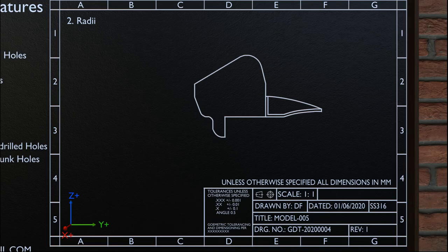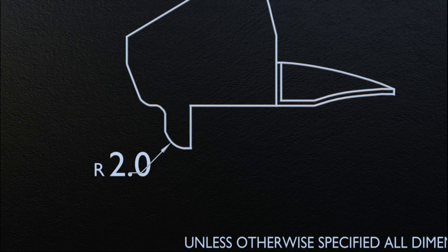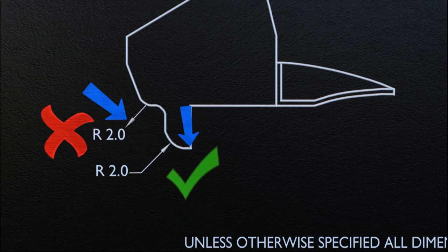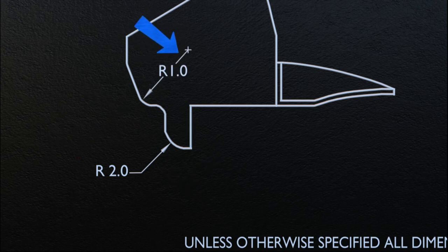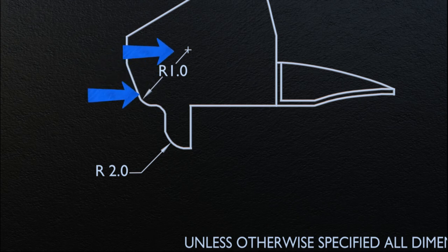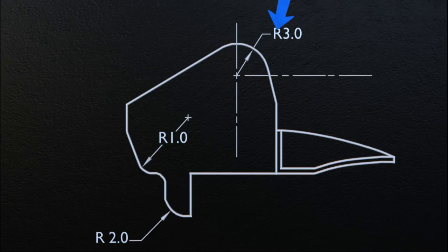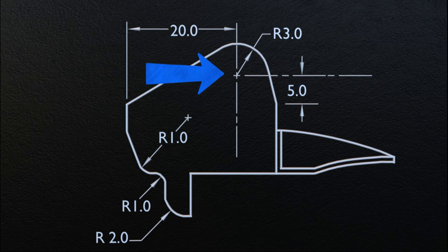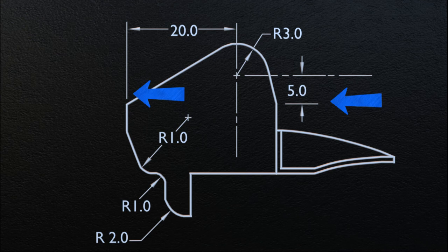The next dimensioning feature we are going to discuss is radii. Each radius value is preceded by the appropriate radius symbol. A radius dimension line uses one arrowhead at the arc end. An arrowhead is never used at the radius center. Where the location of the center is important and space permits, a dimension line is drawn from the radius center with the arrowhead touching the arc, and the dimension is placed between the arrowhead and the center. Where it is inconvenient to place the arrowhead between the radius center and the arc, it may be placed outside the arc with a leader. Where the center of a radius is not dimensionally located, the center shall not be indicated. Where a dimension is given to the center of a radius, a small cross is drawn at the center. Extension lines and dimension lines are used to locate the center.